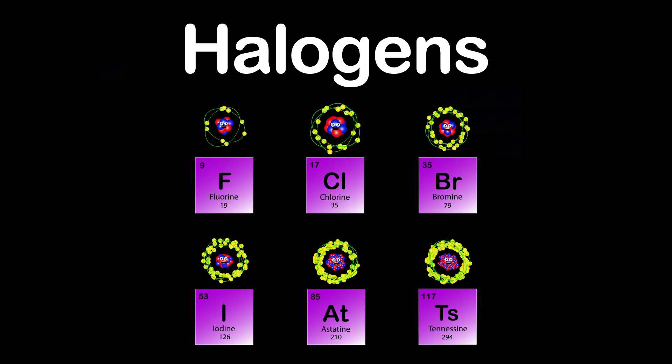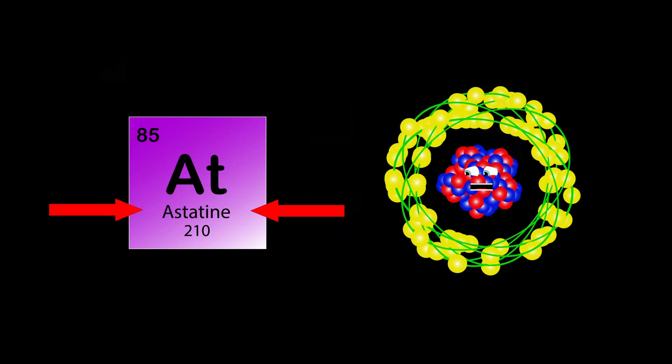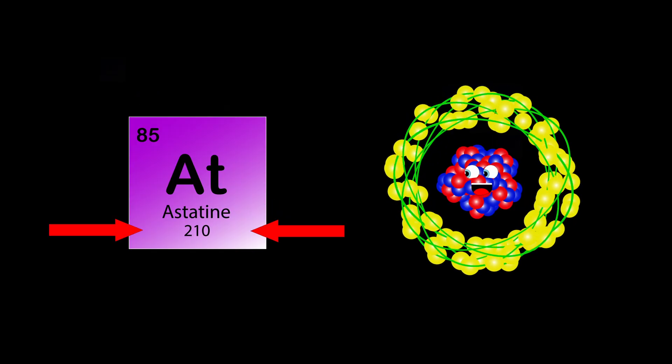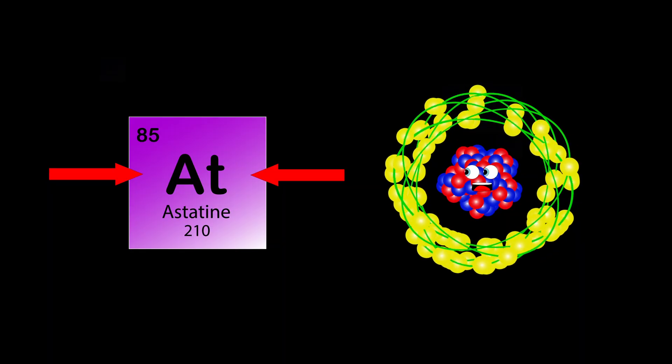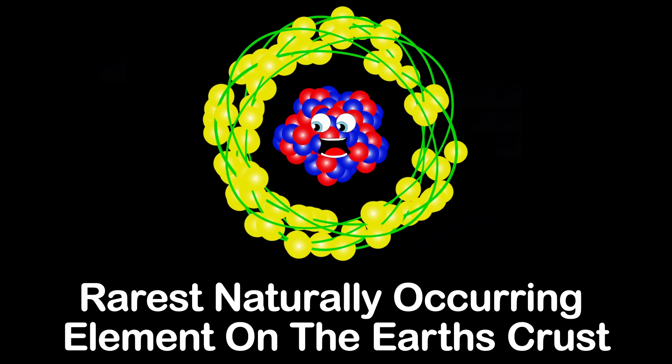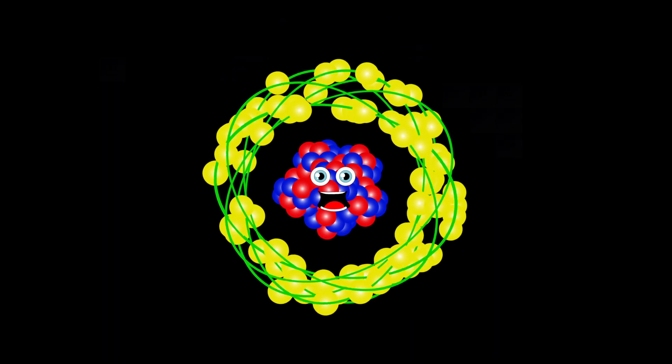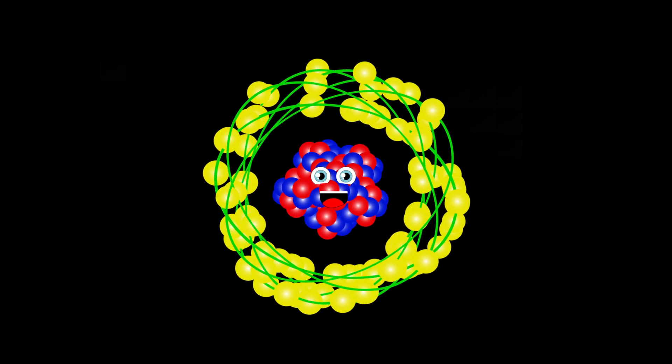Astatine is my name, my atomic number is 85, my atomic mass is 210. At is the symbol given to I. I'm the rarest naturally occurring element on Earth's crust. My properties aren't known with any certainty.